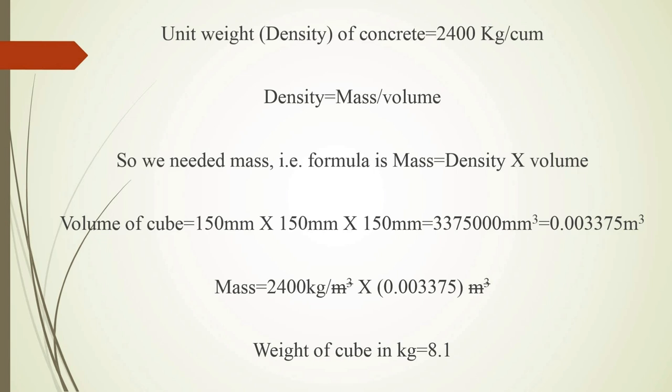So we know the formula for mass equals density times volume. The density of concrete is equal to 2400 kg/m³ and volume of cube is equal to 0.003375 m³.